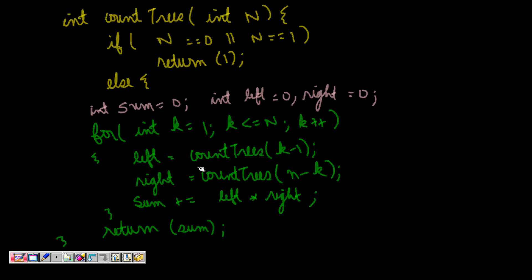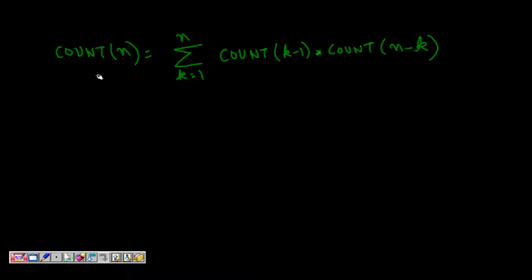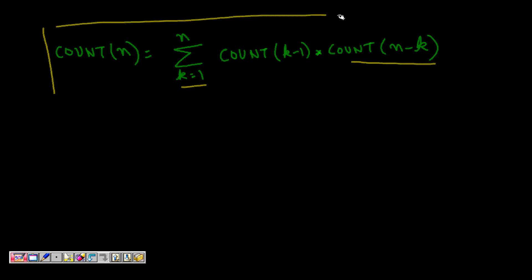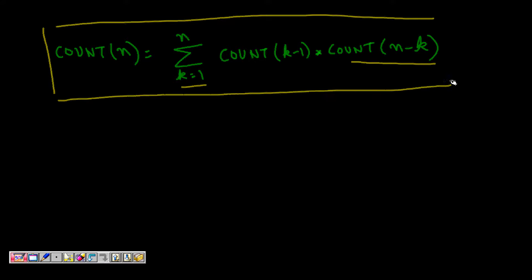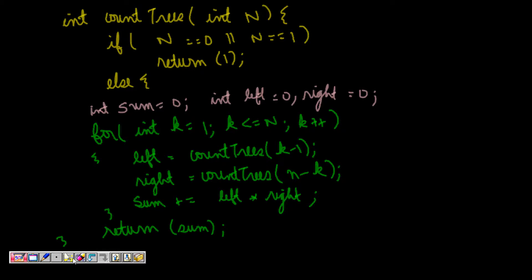So now let's look at the code. The key formula is: count(n) = summation for k=1 to n of count(k−1) × count(n−k), where count(k−1) is the number of trees for the left subtree and count(n−k) is for the right subtree when the kth node is the root.